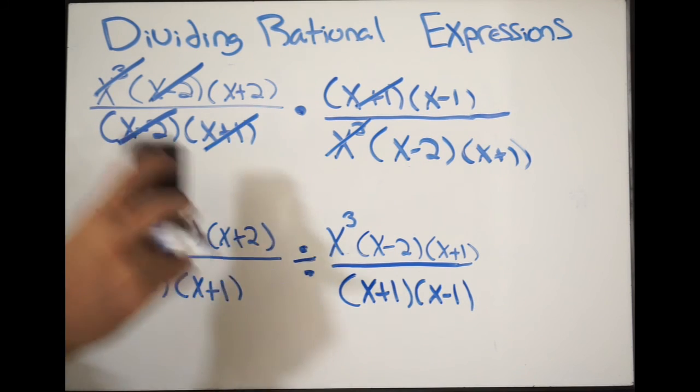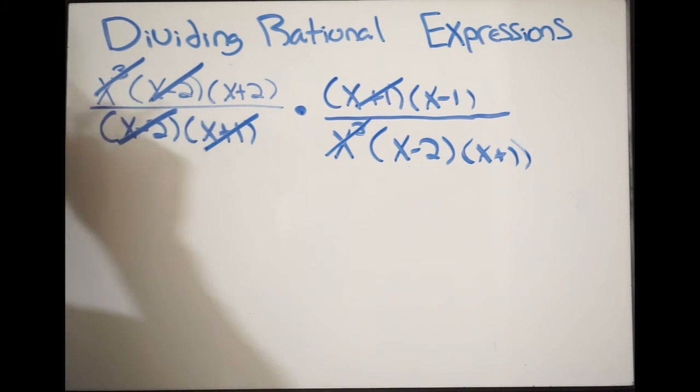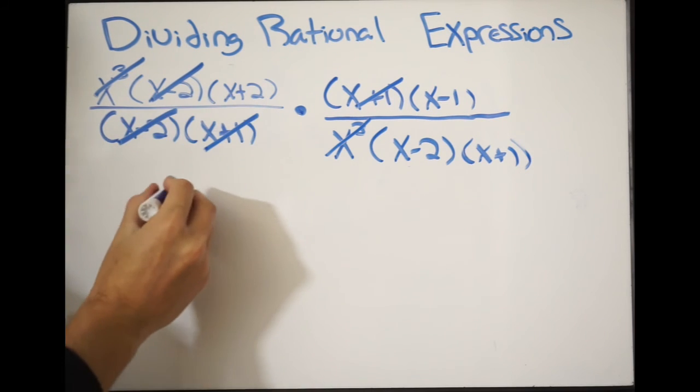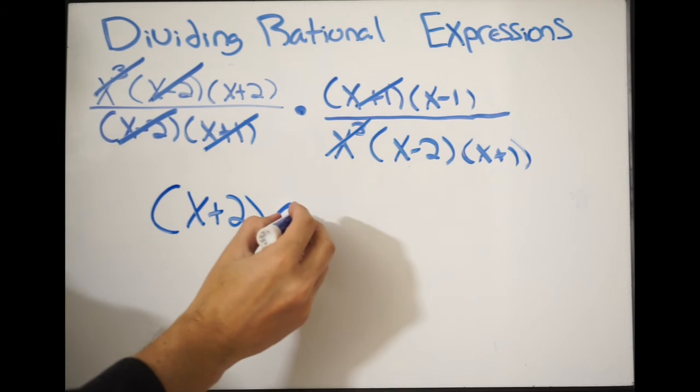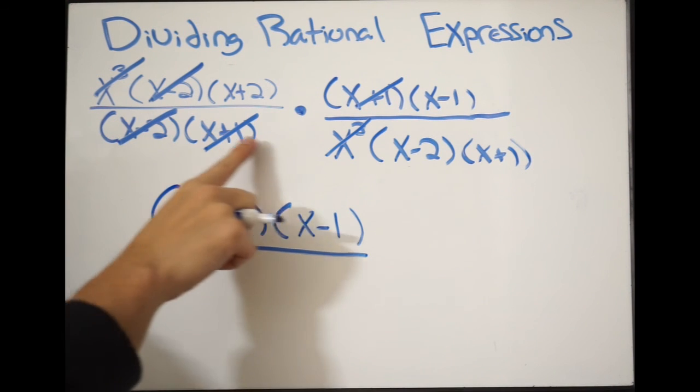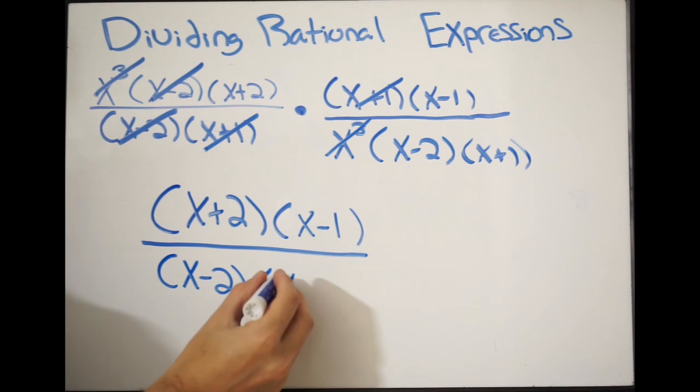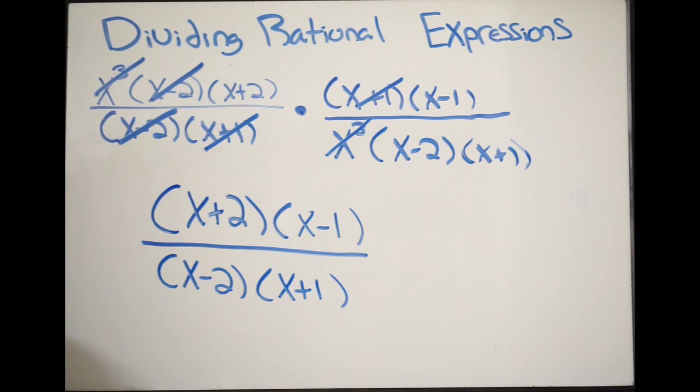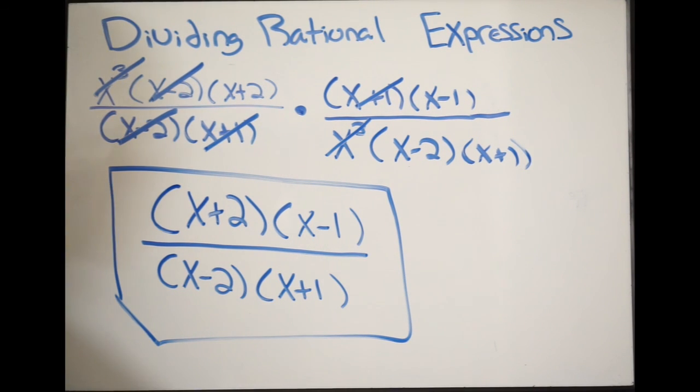Writing it out left to right, starting with the numerator, I have x plus 2 times x minus 1. Working on the denominator, I have x minus 2 times x plus 1. This here is your final simplified answer. That is dividing rational expressions.